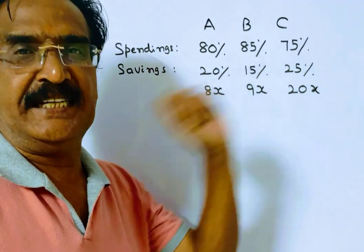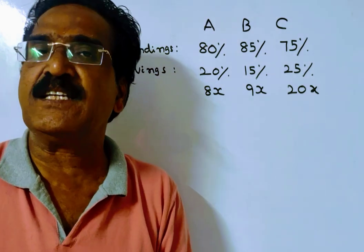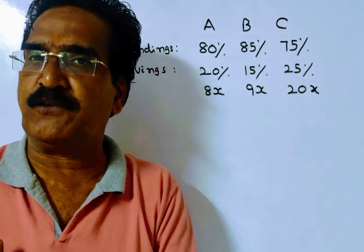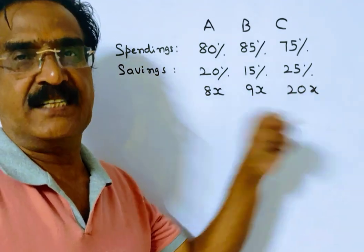Friends, actually it is given that their savings are in the ratio 8x to 9x to 20x. It means their savings are 8x, 9x, 20x.